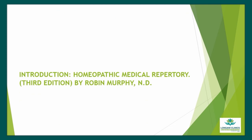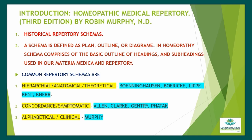We will see historical repertory schemas. A schema is defined as a plan, outline, or diagram. In homeopathy, schema comprises the basic outline of headings and subheadings used in Materia Medica and repertory. Common repertory schemas are: One — hierarchical, anatomical, theoretical, which includes Boning Hassan, Borik, Lippe, Kent, and Nair; Two — concordance, symptomatic, which includes Allen, Clark, Gentry, Fatak; Three — alphabetical, clinical, which includes Murphy.